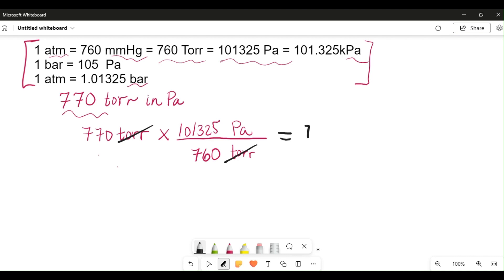And then you end up with 770 times 101,325 divided by 760 Pa, Pascals.